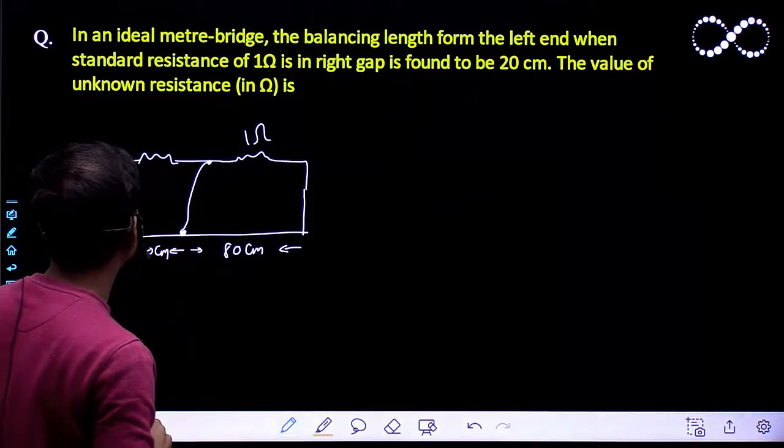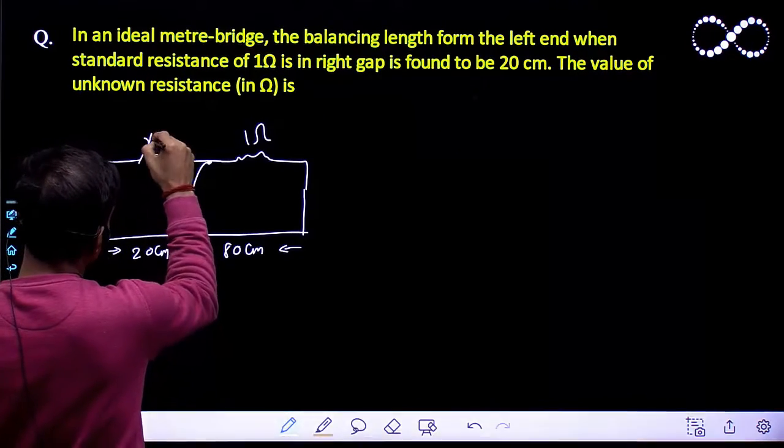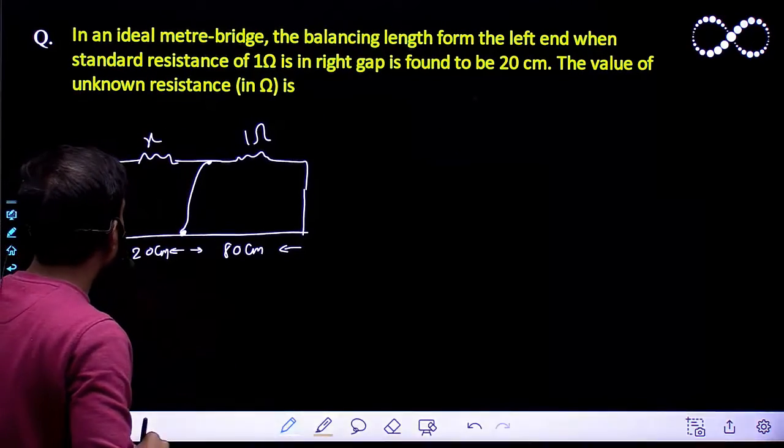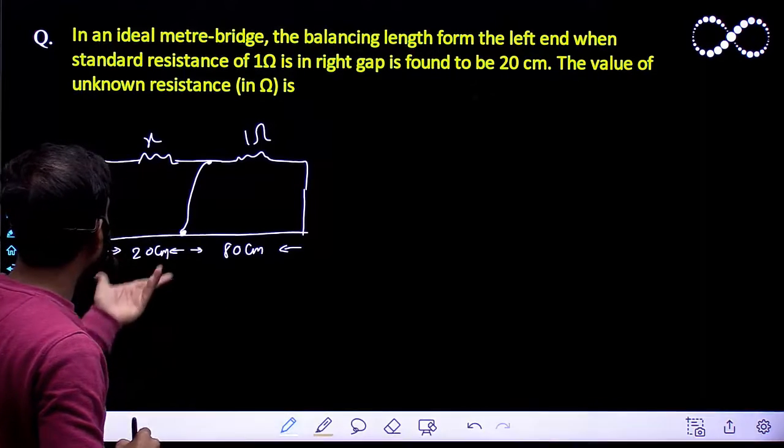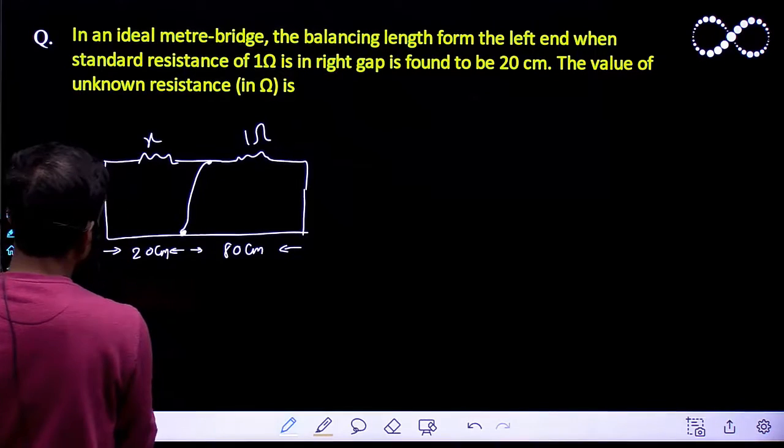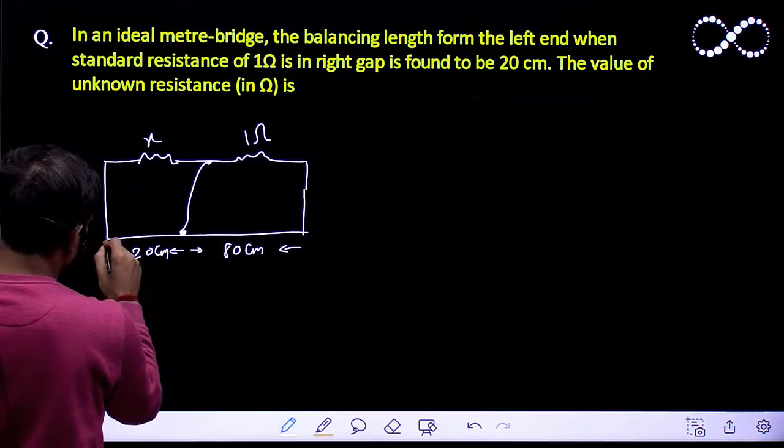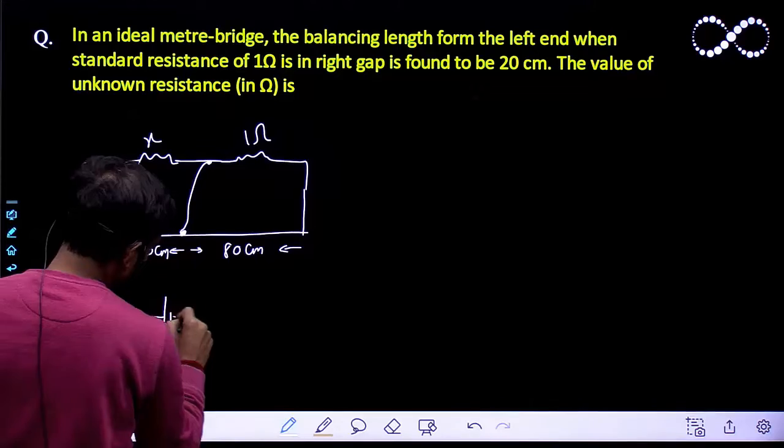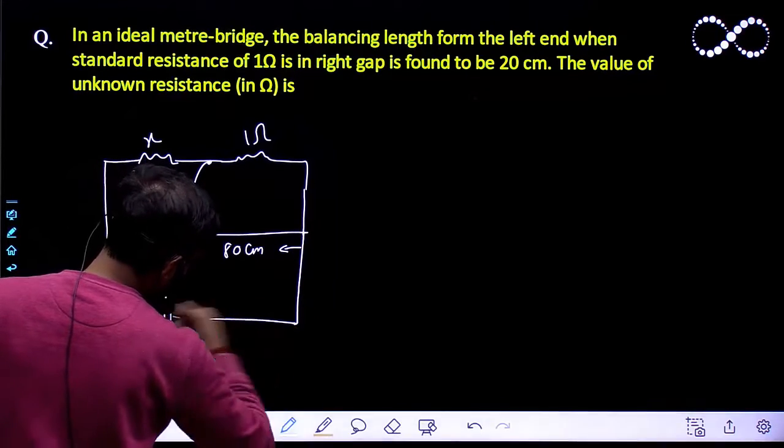The value of unknown resistance you have to find. So let us take the value of this resistance is x. Now this is your 20 cm, right? This is now 20 cm, so I can say from here.